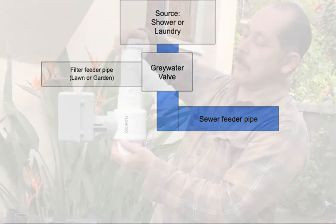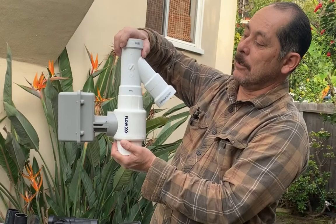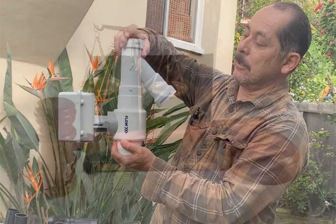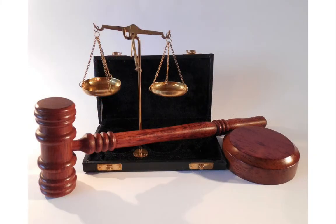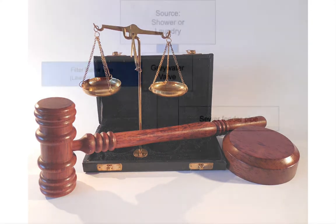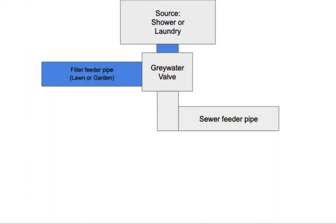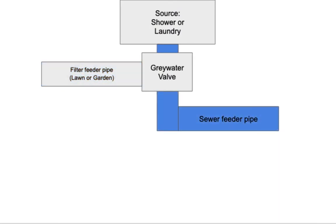To do this, we use a gray water valve. The other important reason is because it's required by law. By law, there has to be the option of diverting the water back to the sewer.